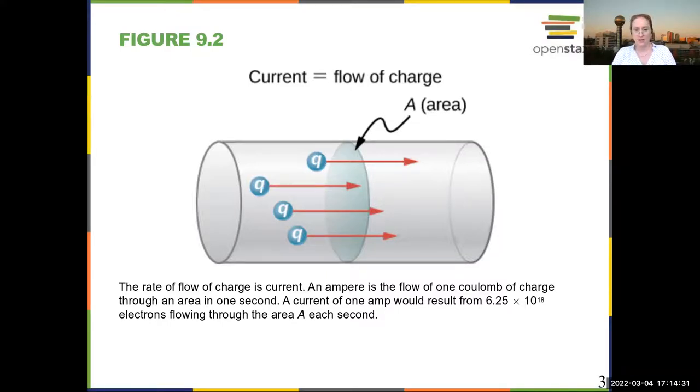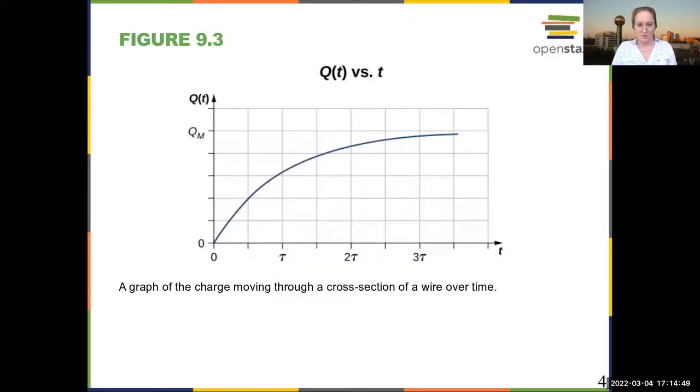This is independent of the area that they flow through. But the smaller the area, the larger the charge in any given component. So this is a graph of charge moving through wire as a function of time.